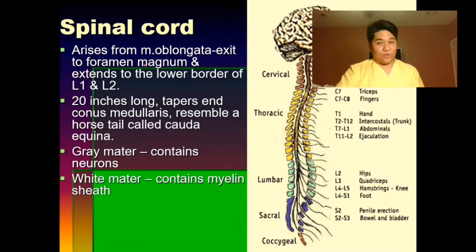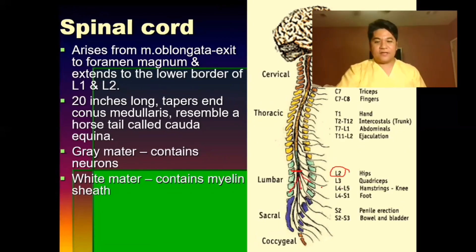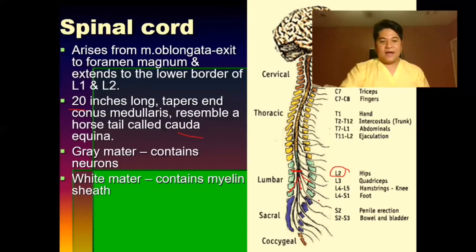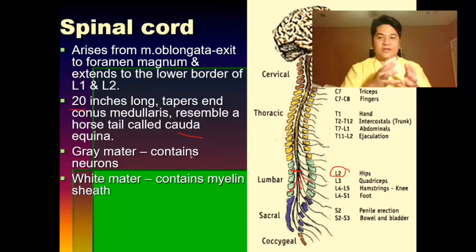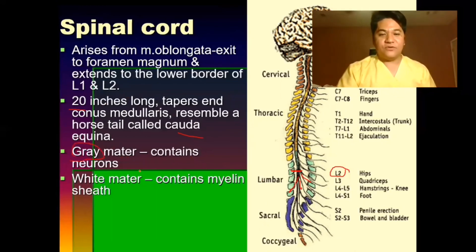The spinal cord arises from the medulla oblongata and terminates at the level of L1 and L2. The tapered end is called the conus medullaris, and the nerve roots below it resemble a horse's tail, called the cauda equina. The spinal cord is approximately 20 inches long and contains gray matter — clusters of neurons — and white matter, which contains neurons covered by myelin sheath that protects the speed of transmission.